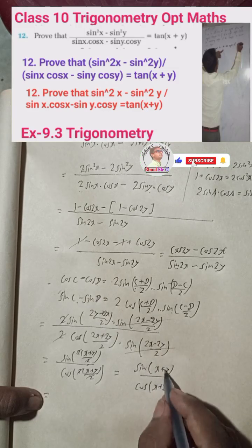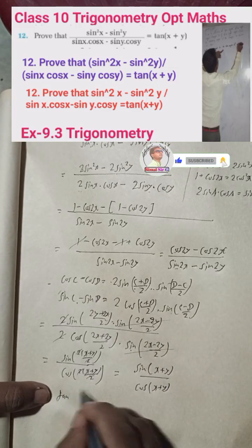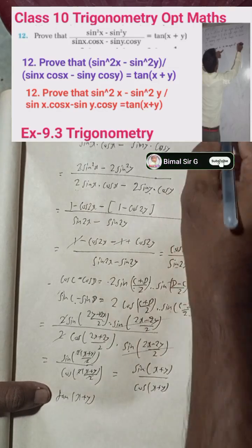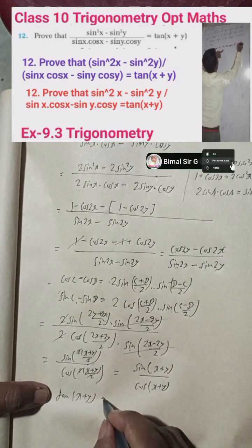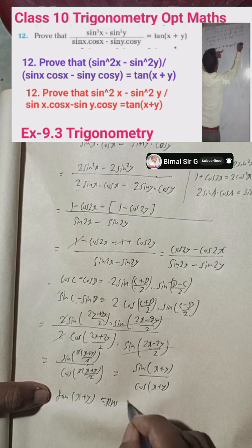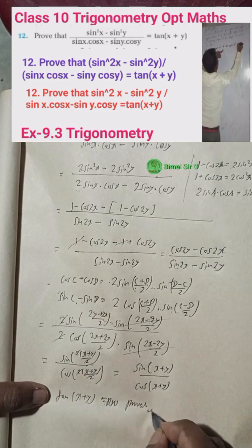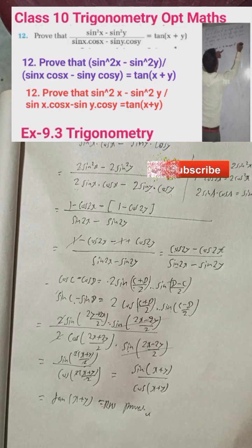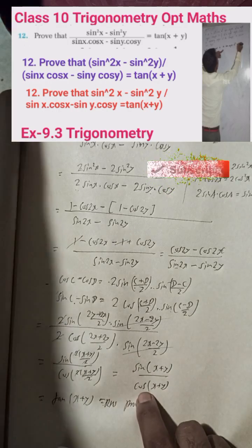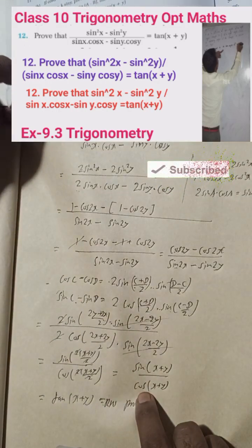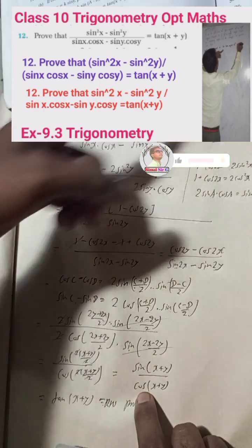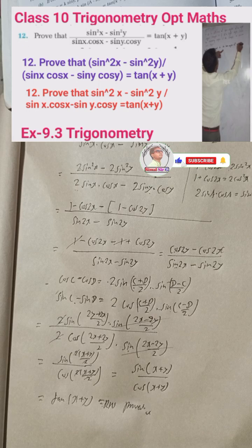sin(x+y) / cos(x+y) equals tan(x+y), which is equal to the RHS. Hence proved. This is the complete solution for this question. Questions 15a, 15b, 14, and 13 have already been uploaded.